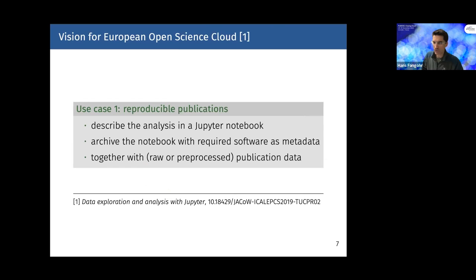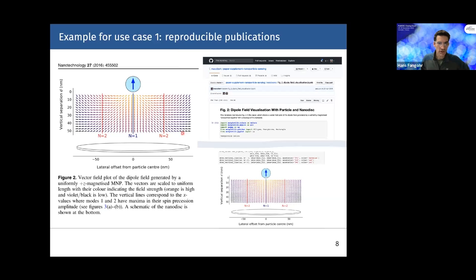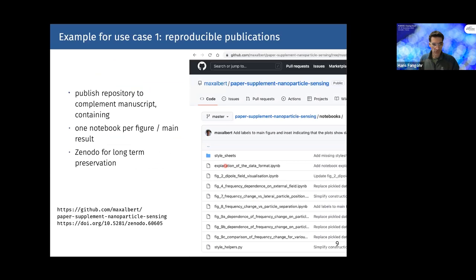An example: figure two from a paper, with a Git repository published on GitHub and made available via Zenodo, with a notebook per figure. At the end of the notebook, the figure is created. The repository contains various notebook files for the important figures and findings in the publication.